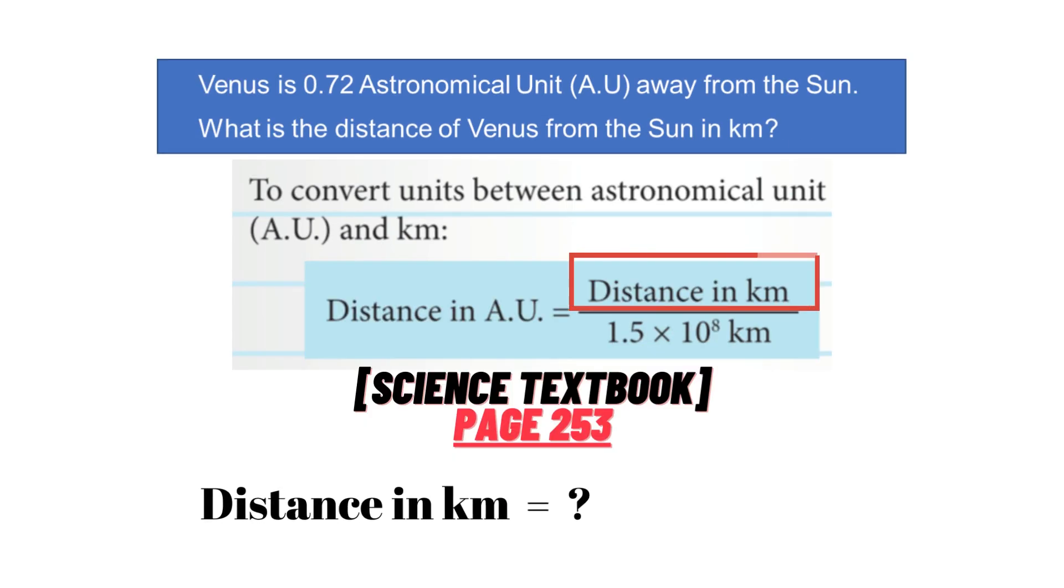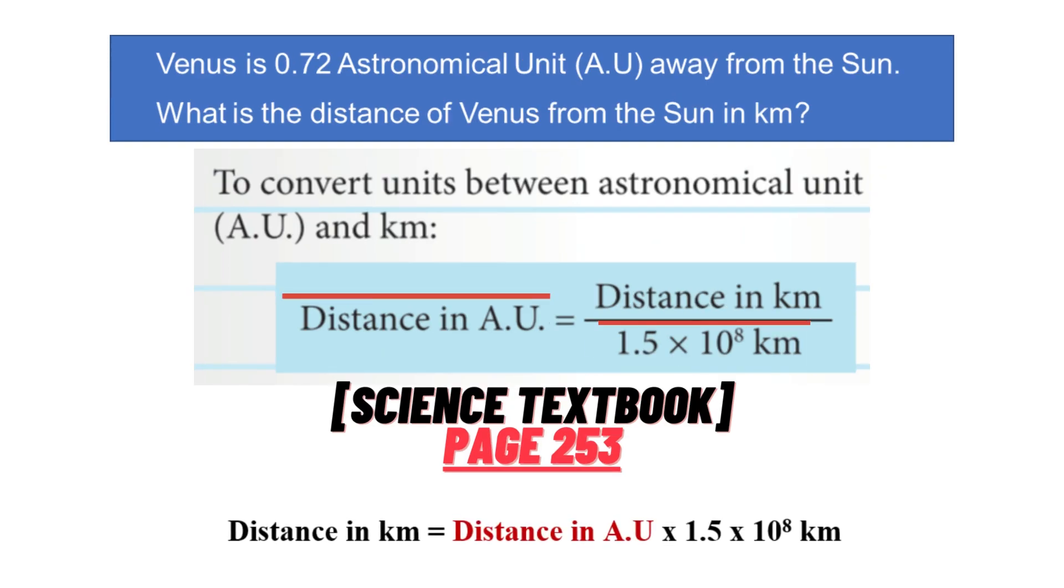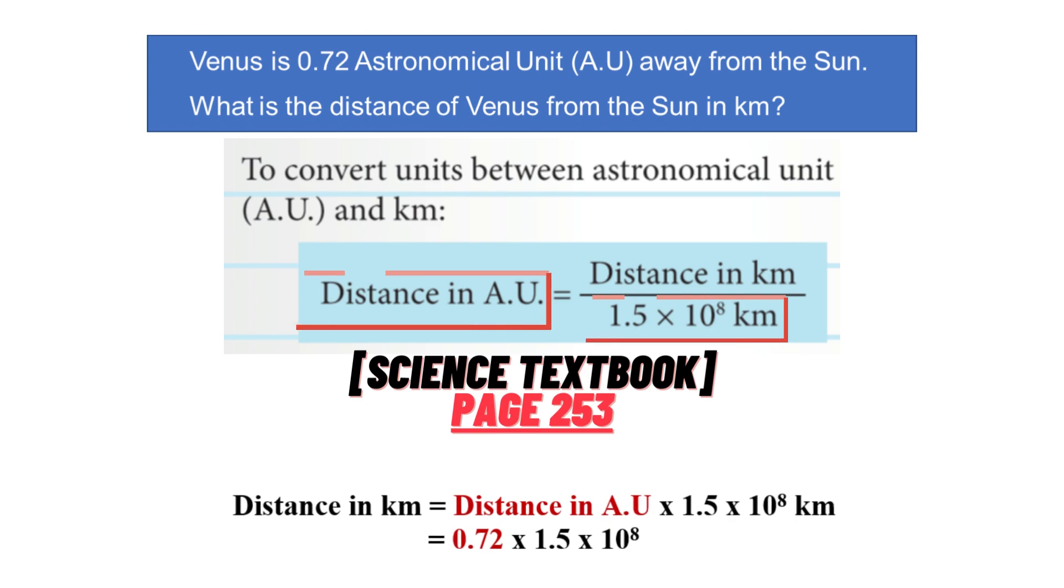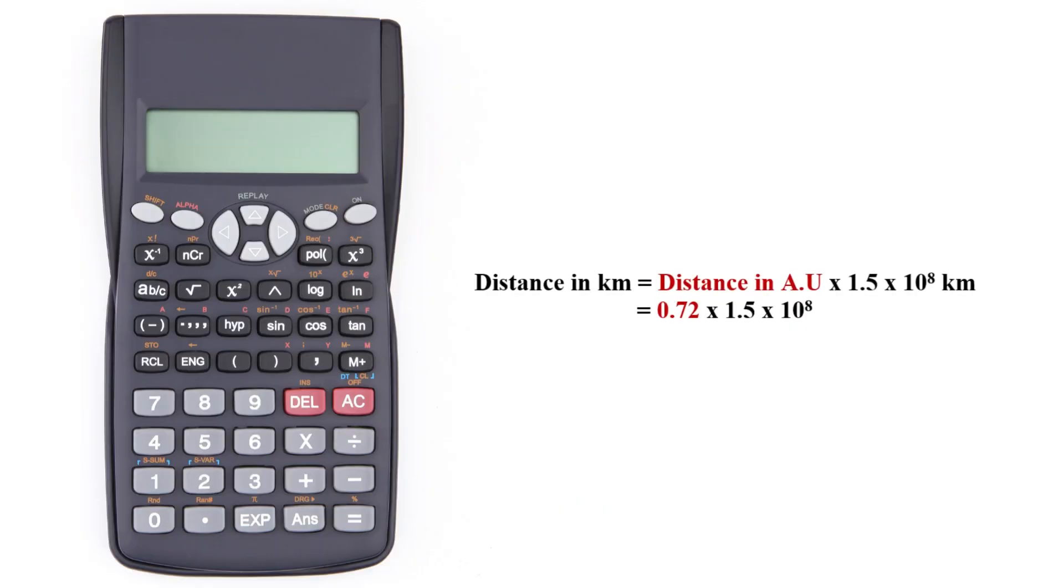Let's calculate the distance of Venus from the sun in kilometers. The distance in kilometers equals 0.72 times 1.5 times 10 to the power of 8 kilometers.